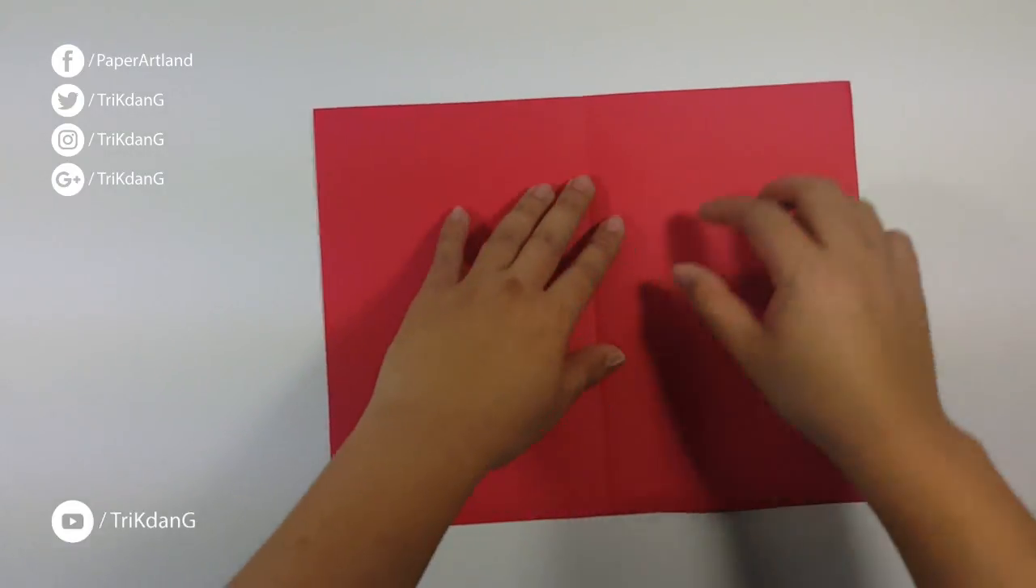Flatten out the paper as well. Next step, let's start from this tip, fold it to the center crease. And then, repeat the same fold for the other side. Let's adjust it a little bit. Alright, so this is what you should have.